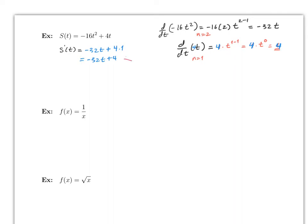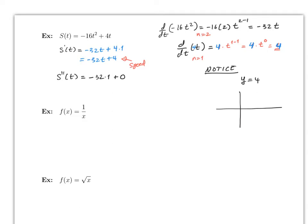Remember this represented the speed. When you take the second derivative, which is the derivative of minus 32t plus 4, this will give you minus 32 times 1, plus 0. Note: if you have just y equals 4 and you graph this line, it's a straight line and what is the slope? The slope equals 0. Therefore the derivative of any constant is always 0 — the derivative with respect to x or t of any constant is always 0.